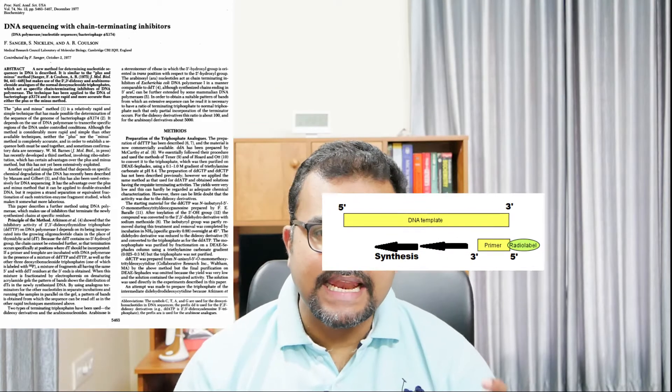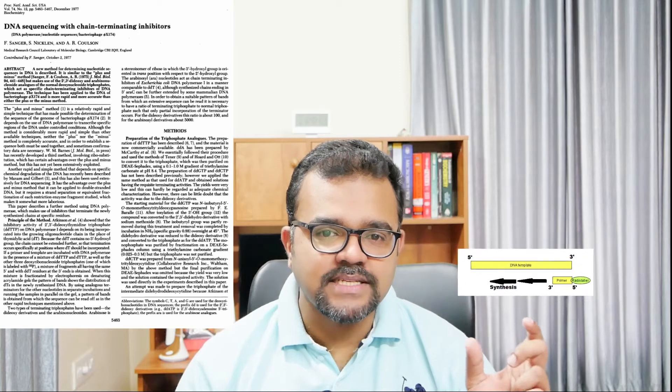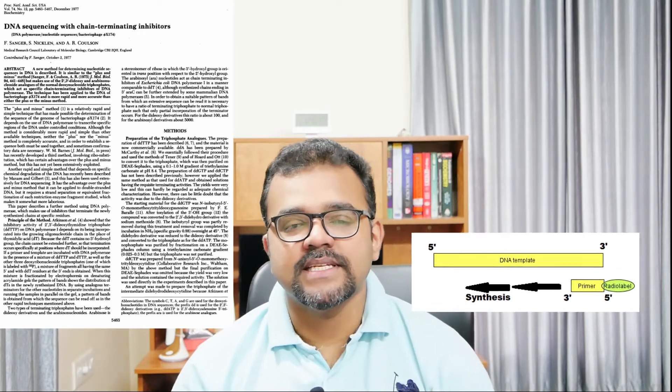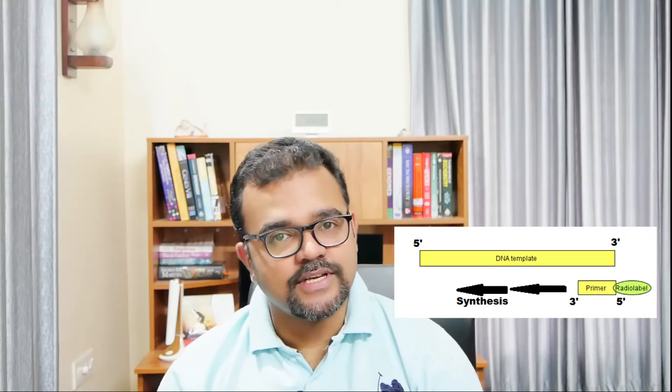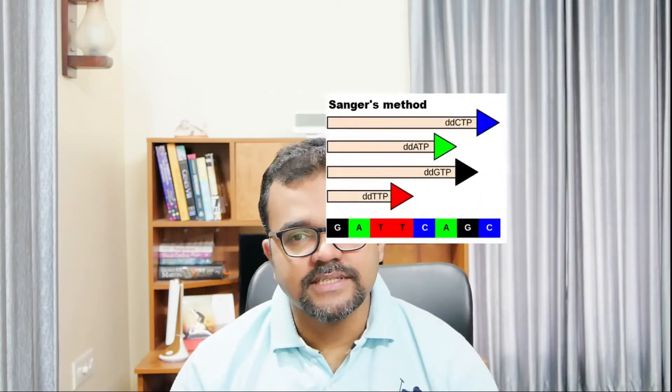This method is based on synthesizing an N-labeled strand of DNA from a primer annealed to a template and terminating the strand at one of the four nucleotides. The enzymatic method of sequencing DNA produces an array of fragments where each fragment differs from the one larger and the one smaller than it by a single nucleotide.